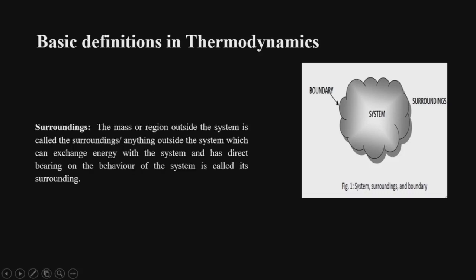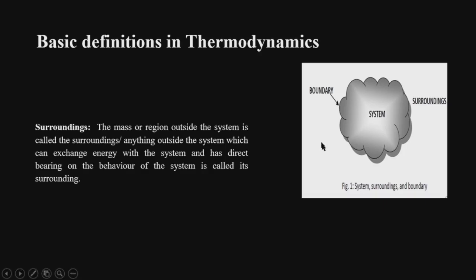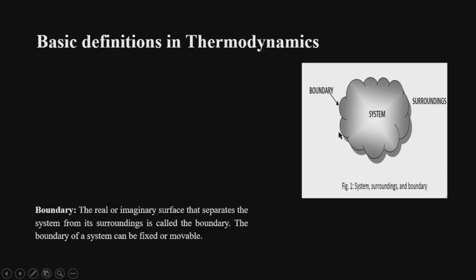A system can also be defined as the quantity of matter or a region bounded by some closed surface in space chosen for study. The second term is the surroundings — anything outside the system. The mass or region outside the system is called the surroundings, and anything outside the system which can exchange energy with the system and has a direct bearing on its behavior is called the surroundings.